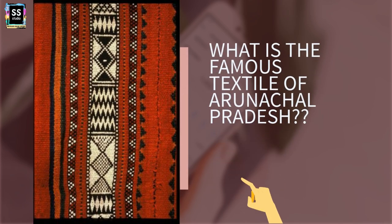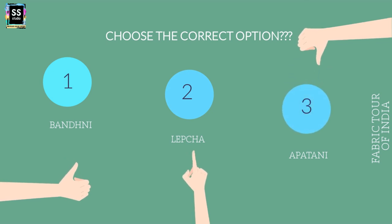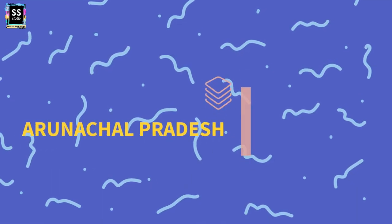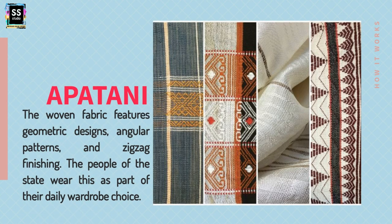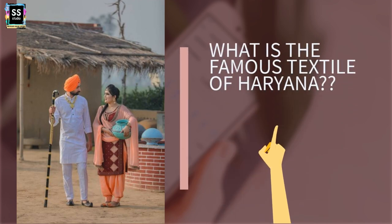State 12: Which is the famous textile of Arunachal Pradesh? The options are: Is it Bandhani? Is it Lepcha? Or is it Apatani? It is Apatani. Apatani is an art technique considered to be the most progressive among all the tribes of that state. It is a woven fabric featuring geometrical designs, angular patterns, and zigzag finishing. People of that state have this fabric prominently in their wardrobe.